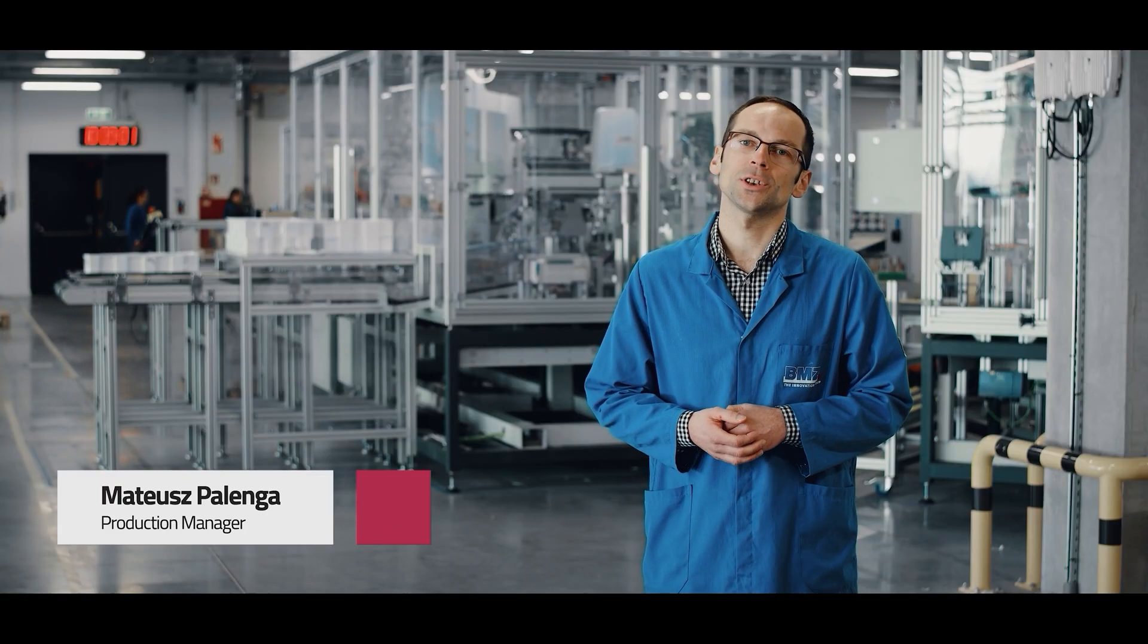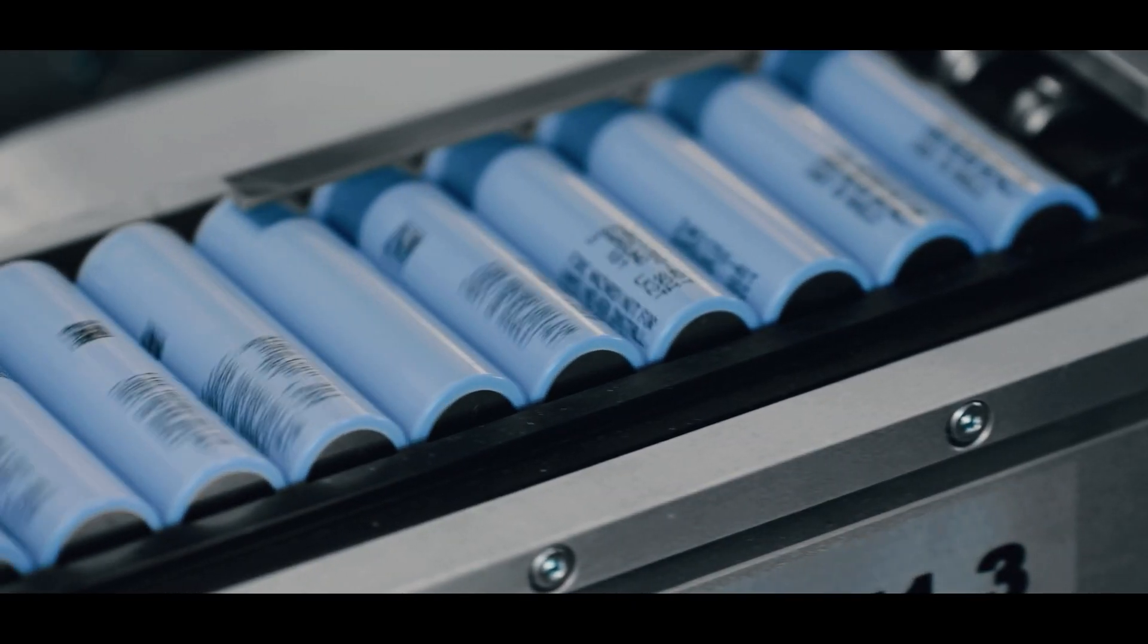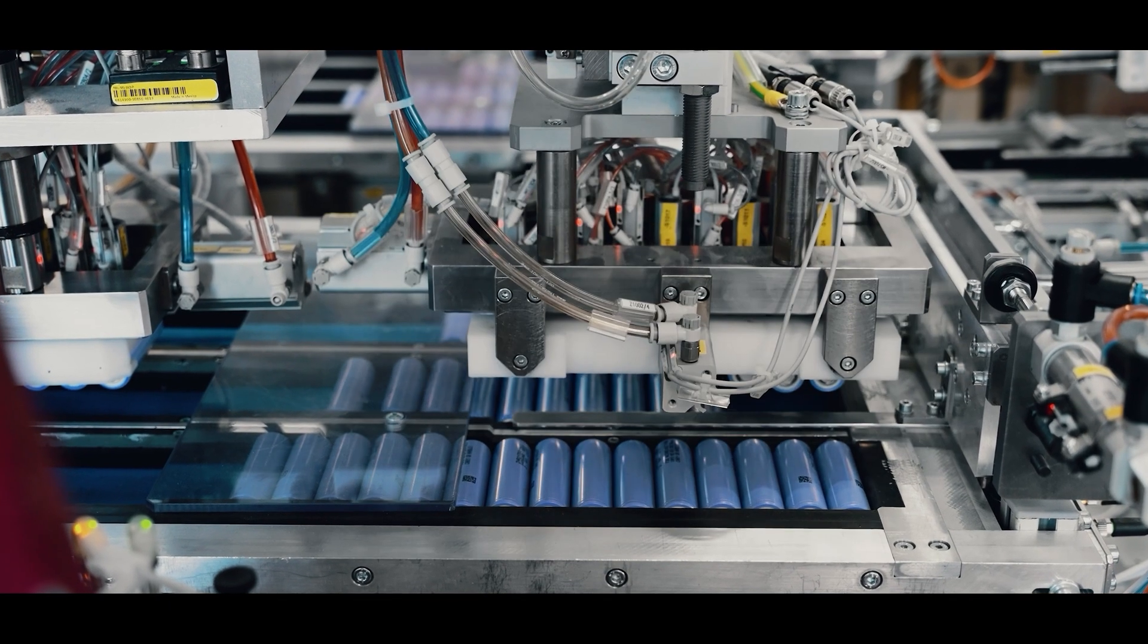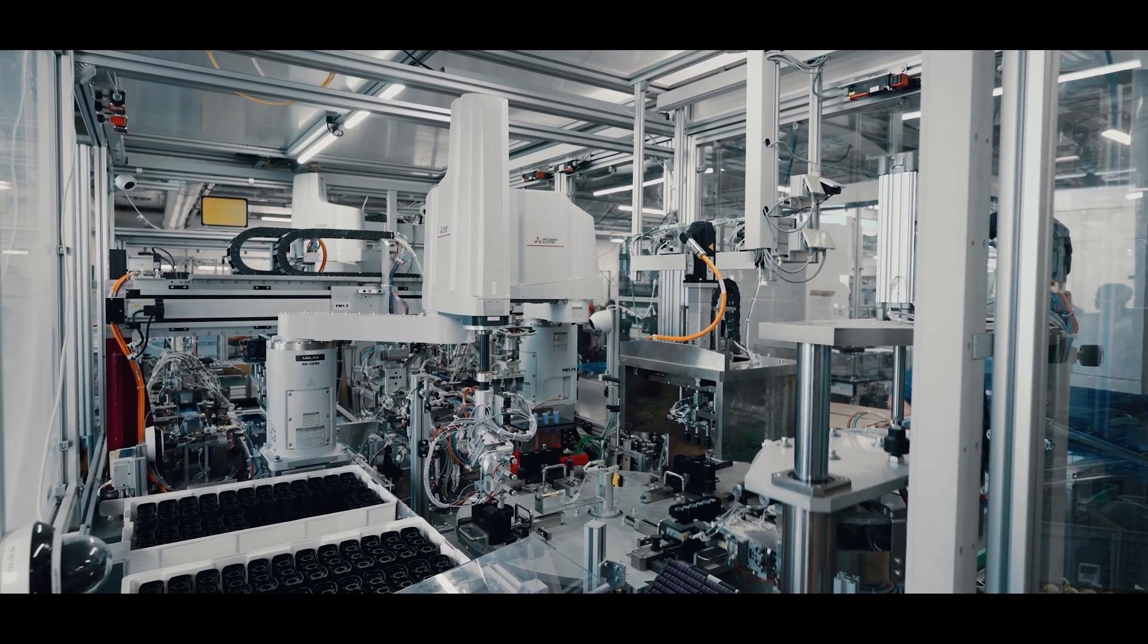The introduction of robots into our organisation has made the initial production process fully automatic. The robot takes a cell from the box, then verifies it in terms of quality, and automatically inserts it into the housing, the so-called cell holder.